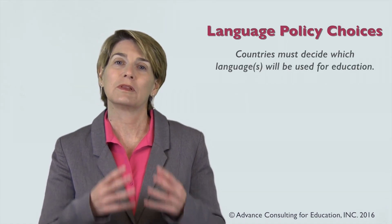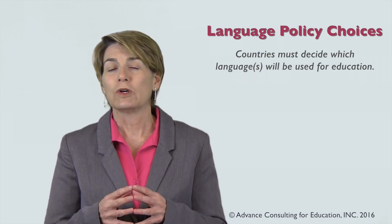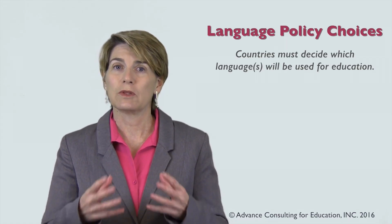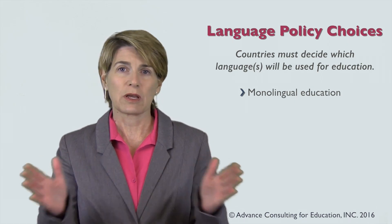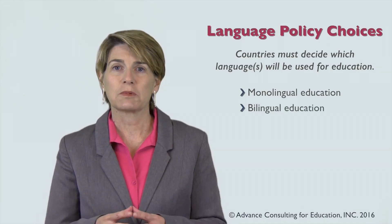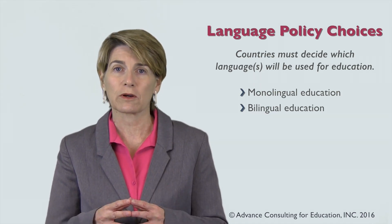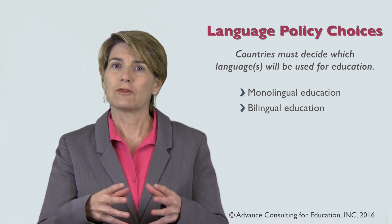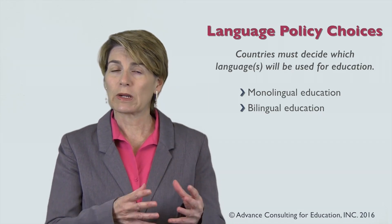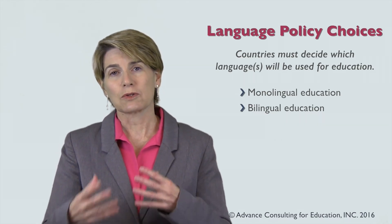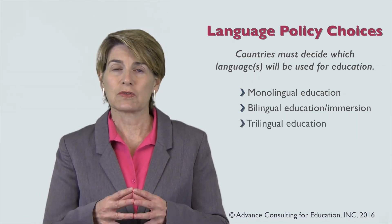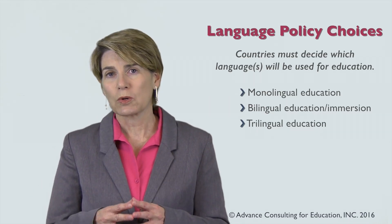Societies also have choices when it comes to language and education. The first option is monolingual education, where students learn every subject in a single language. The second is bilingual education, where students learn all subject matter in two languages — with variations such as certain days or mornings in one language and afternoons in the other, or certain subjects in one language and others in the second. Bilingual education is also called immersion education, and there can even be trilingual education.